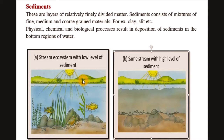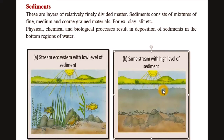In the diagram you can see that a low level of sediment allows sunlight to pass through the water to the aquatic ecosystem. When there is an increase in the amount of sediment, sunlight cannot pass through. Sediments consist of a mixture of fine, medium, and coarse grain materials such as clay and silt. The proportion of sediments is not fixed; they settle at the bottom of the water.